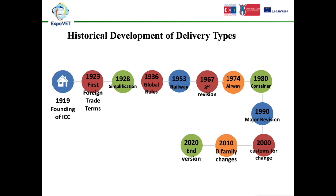At 1990, a major revision was published. The terms FOR (free on rail), FOT (free on truck), and FOB (free on airport) were simplified into FCA. At 2000, a minor change was released for customs. At 2010, Incoterms 2010 took into account the spread of free zones in world trade, the increasing use of electronic communications, rising security concerns regarding goods movement, and changes in transport practices. Significant changes occurred in this version. At 2020, the latest version was released to keep up with the current world.